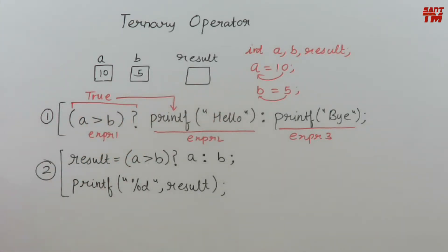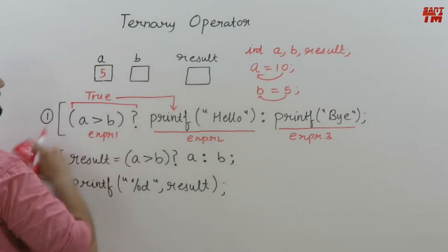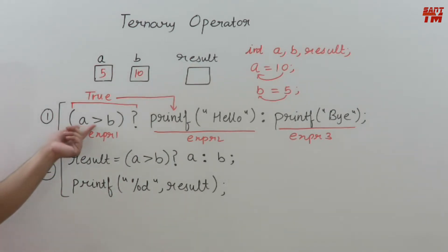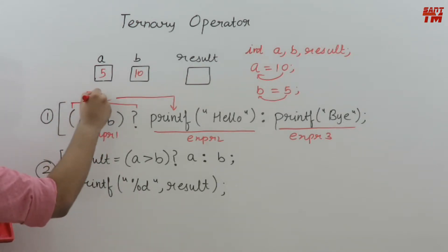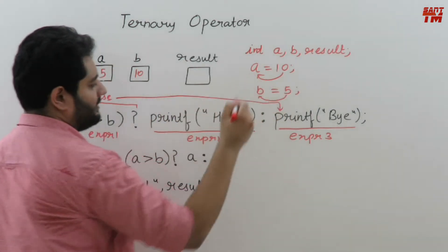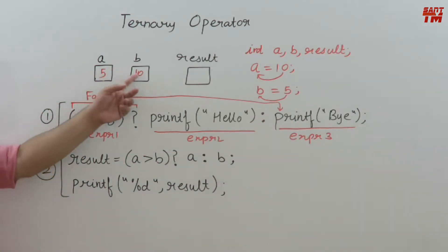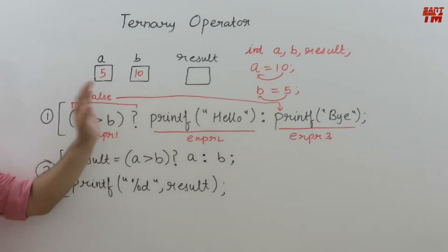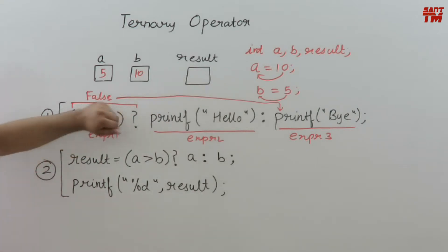Now consider a case where I change the value of a to 5 and b to 10. Now a is greater than b is false. When expression one is false, expression three will be executed instead of expression two. So on the console screen you will simply see 'bye'. If a is greater than b you will see 'hello'; if a is less than b you will see 'bye'. This is how the code is working.